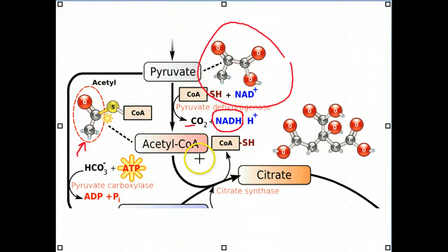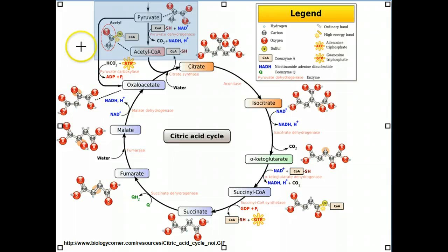So now we're going to enter the Krebs cycle. We're going to go from acetyl-CoA and enter this Krebs cycle. The box that you see up top here, shaded in blue, is basically from the previous slide, showing you the pyruvate converted to acetyl-CoA. Now acetyl-CoA will go into the Krebs cycle, same as the citric acid cycle here.